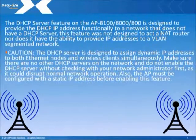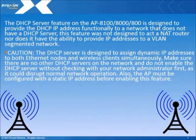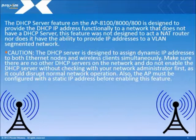The DHCP server feature on the AP 8100 and 8800 is designed to provide DHCP IP address functionality to a network that does not have a DHCP server. This feature was not designed to act as a NAT router, nor does it have the ability to provide IP addresses to a VLAN segmented network.